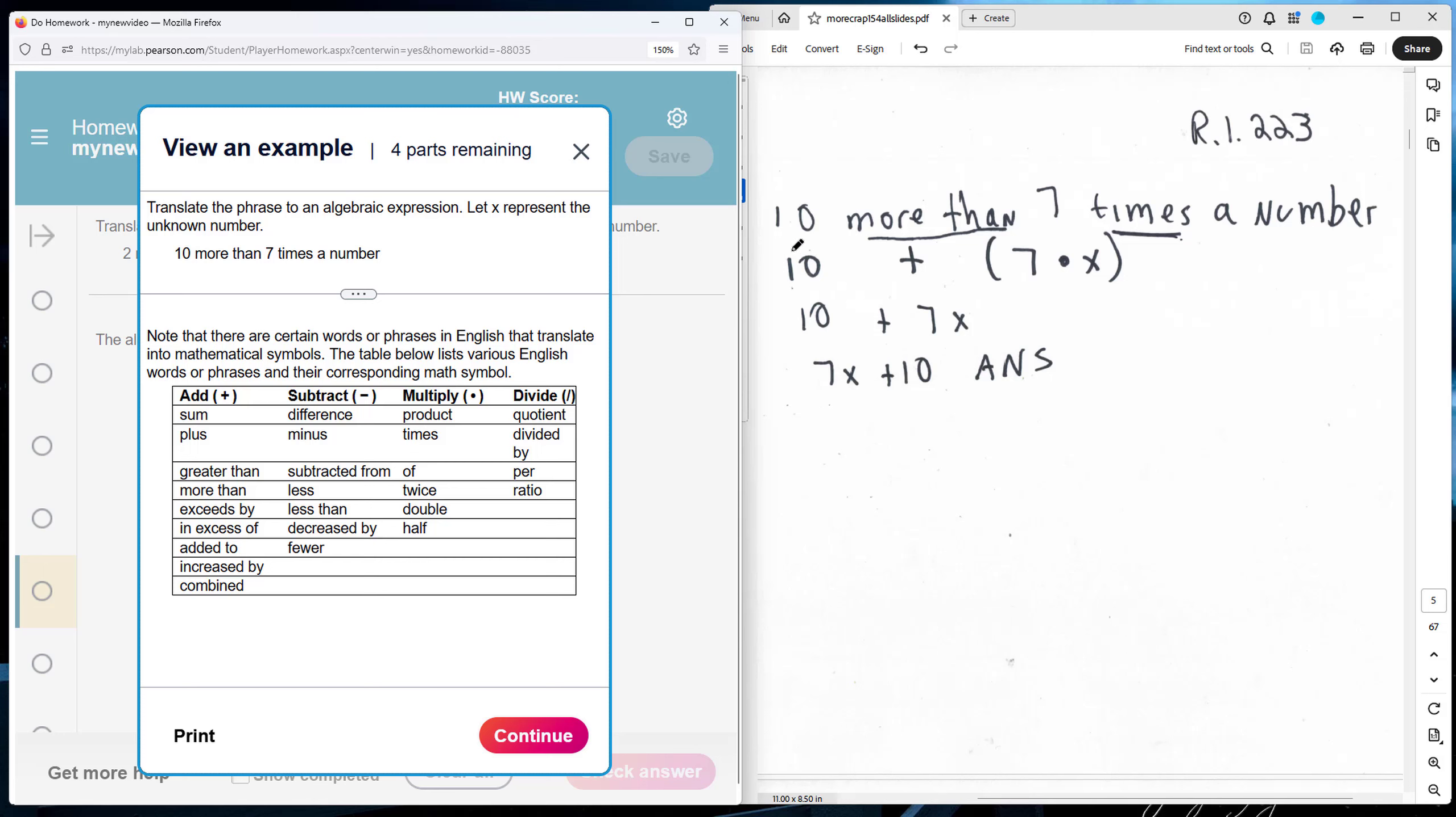So I say 10 more than - 10 plus the quantity here. A product, so it's going to be two parts to it, two inputs here. Seven times a value - we don't know what it is, so we call it x. So we end up with 10 plus 7x. The equivalent is 7x plus 10 for my final answer.